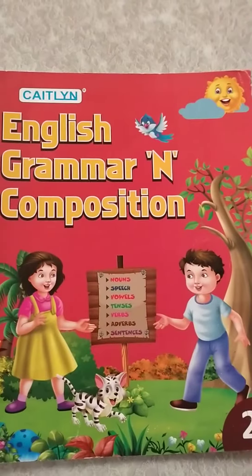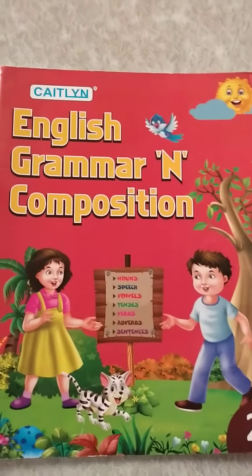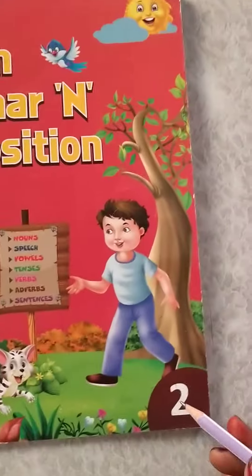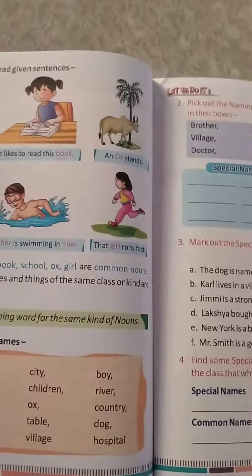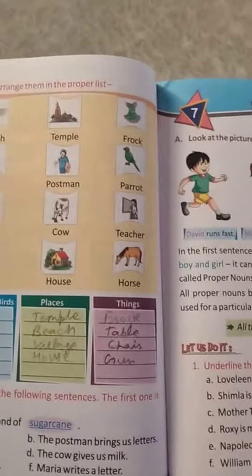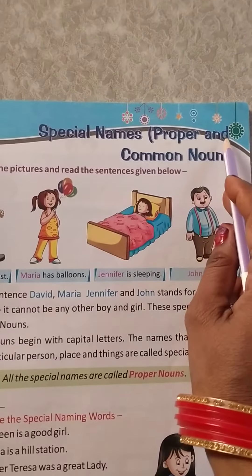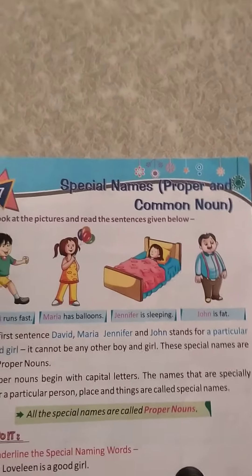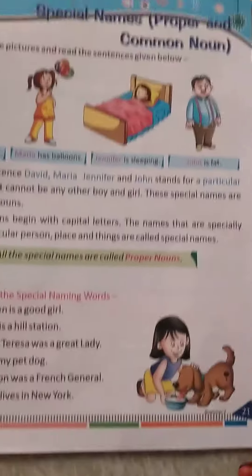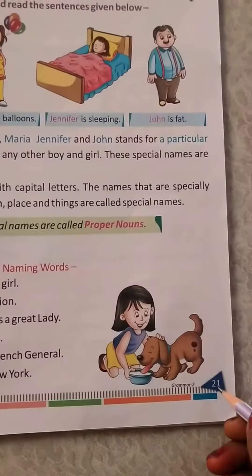Hello, good morning all of you students. Today we are going to start with our English grammar subject of class 2nd. Now for new book students, today we are starting with chapter number 7, special names — proper and common noun of the second term, first chapter. This is on page number 21.